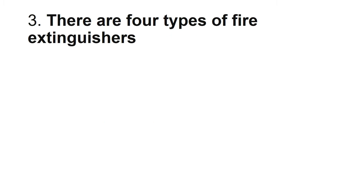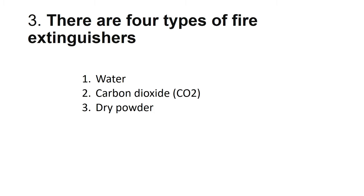There are four types of extinguishers. The extinguishing agents are: water, carbon dioxide (CO2), dry powder, and foam type. Nowadays these four types of fire extinguishers are available. Some fire extinguishers are labeled A, B, C — they contain materials that can be used for any type of fire.